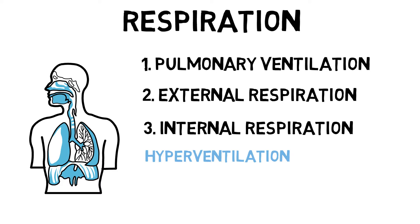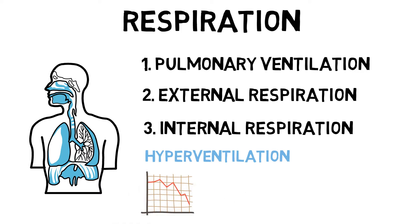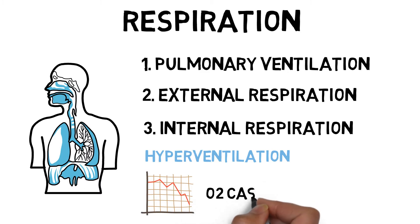The whole respiratory process relies on the body's ability to diffuse gases. A difference in partial pressure of gases in the alveoli and blood creates pressure gradients. These pressure gradients lead to diffusion, as gas moves from a region of high partial pressure to a region of low partial pressure. This is referred to as the oxygen cascade.